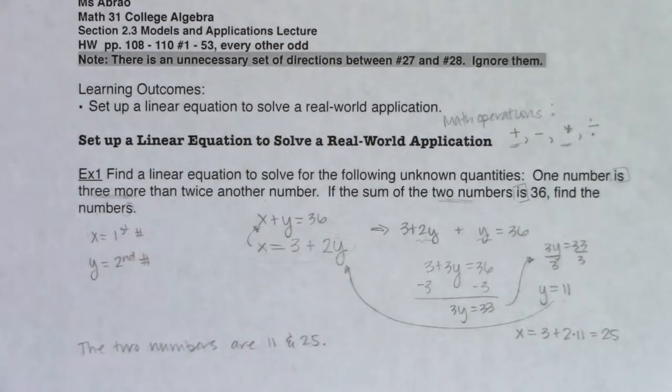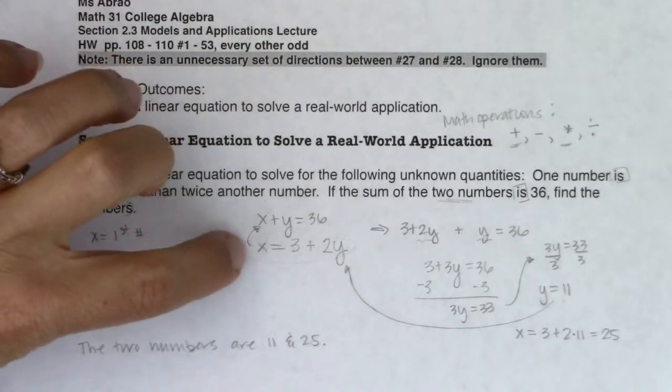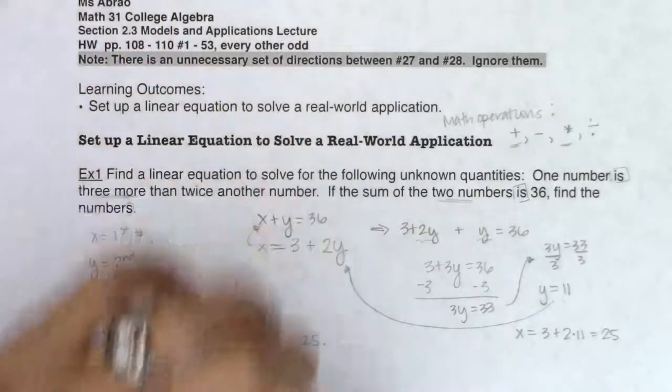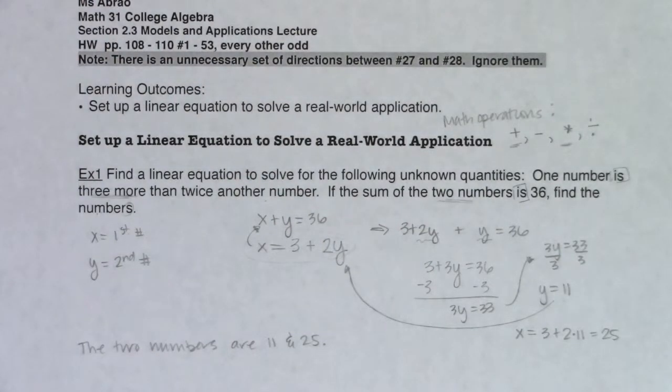If I was going to write this solution up, the two numbers are 11 and 25. I'm fine if you want to say 25 and 11 or 11 and 25. Again, you could have also written this as y equaling 3 plus 2x and you would have gotten the same answer. Ultimately our numbers are 11 and 25. All right, so with that we're going to move on to example two. See you in a bit, bye.